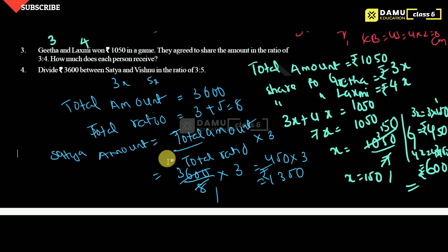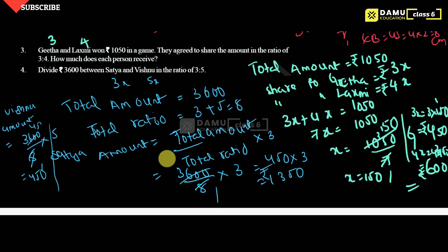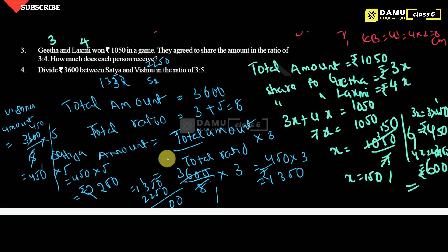Next, Vishnu's amount will be 3,600 by 8 into 5. That is 450 into 5, which is 2,250 rupees. Vishnu will get 2,250. Satya will get 1,350. If you add both, 1,350 plus 2,250 gives 3,600 rupees.